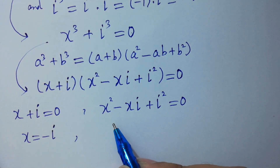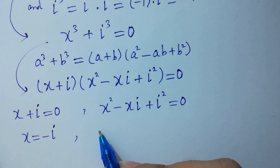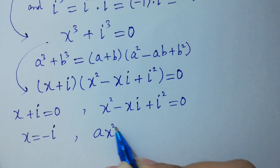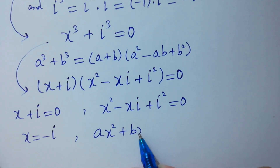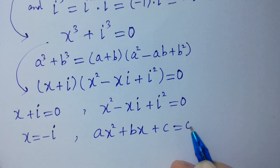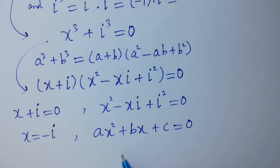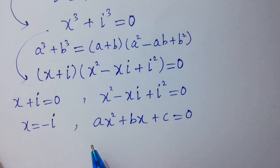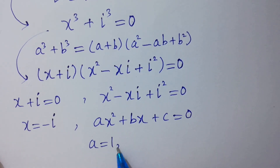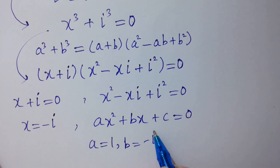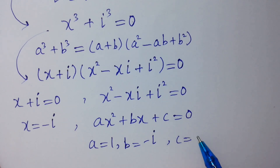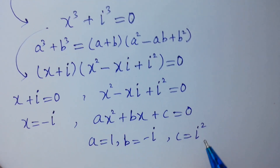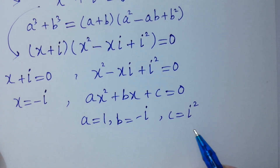And since x square minus xi plus i square equal to 0 is a quadratic equation, by comparing with ax square plus bx plus c equal to 0, we get a equal to 1, b equal to minus i, c equal to i square, and i square equal to minus 1.